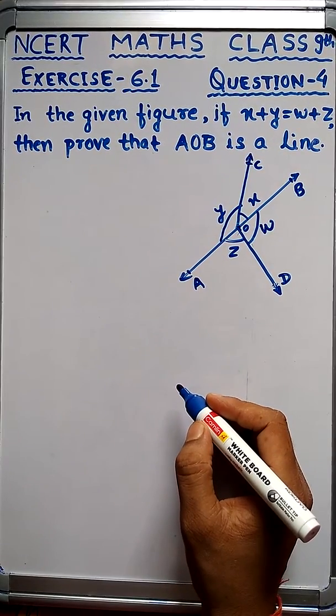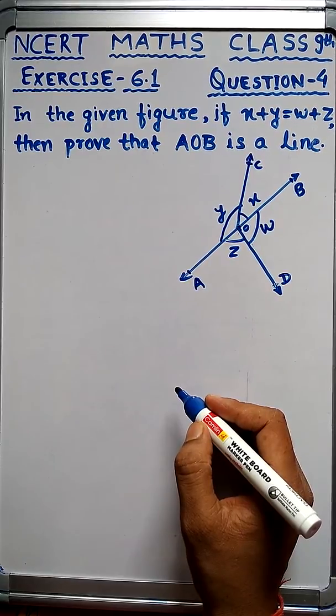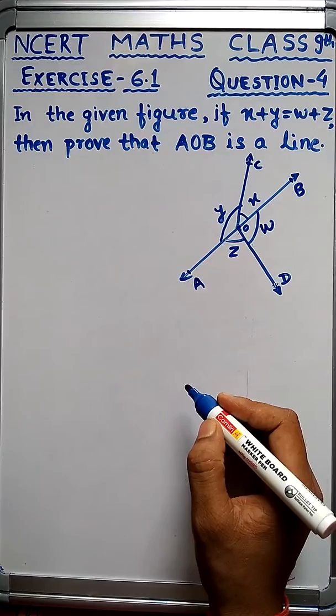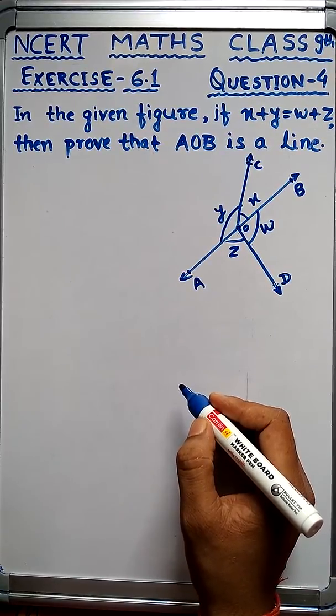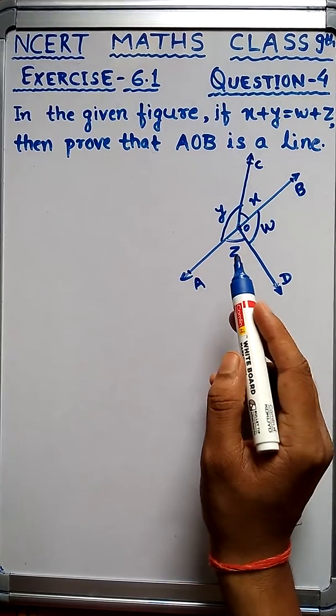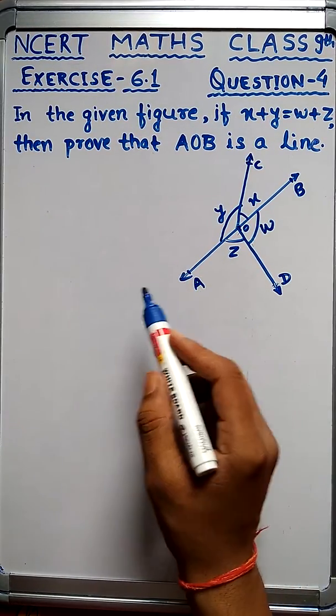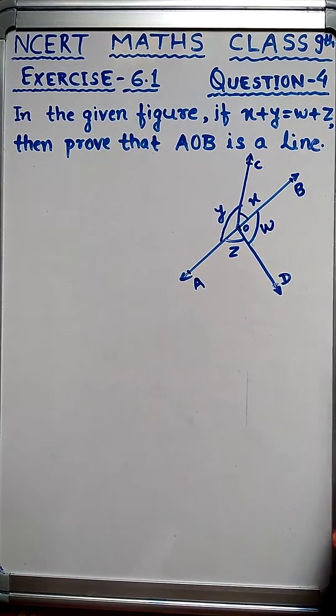Hello guys, welcome to our channel Amazing All Rounder. Today we are going to discuss question number 4 of Exercise 6.1 of Class 9th NCERT Maths. The question is: In the given figure, if x plus y equals w plus z, then prove that AOB is a line.